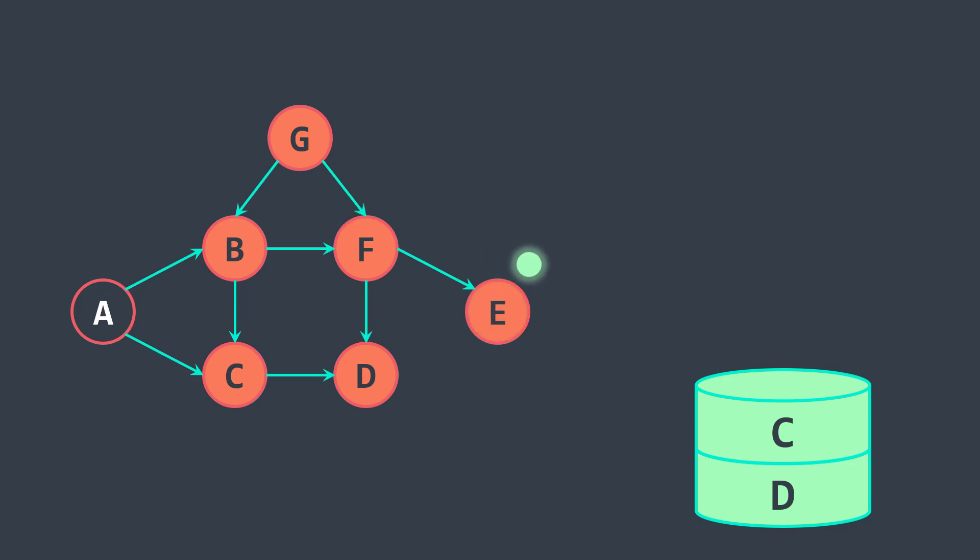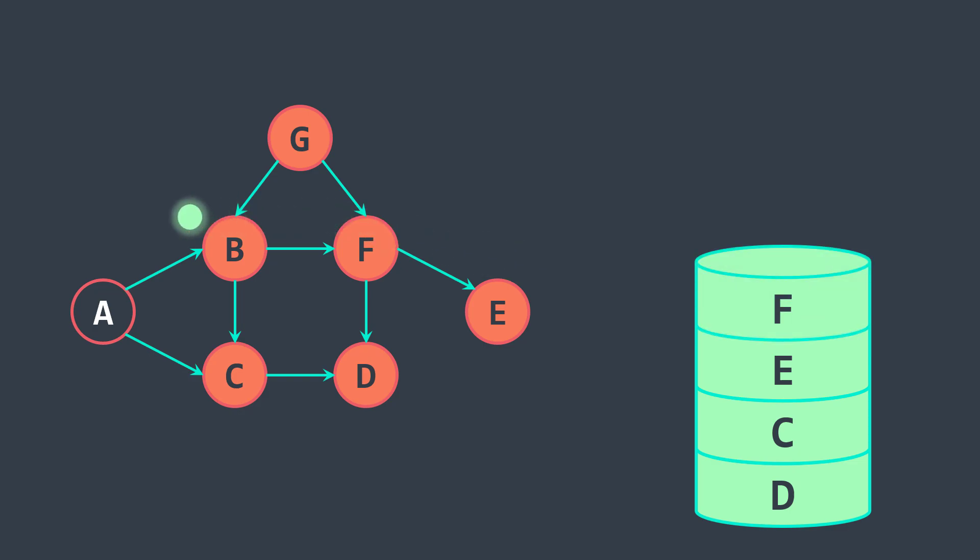E has no neighbors, we push and we backtrack. We visited all neighbors of F, we push and we backtrack.